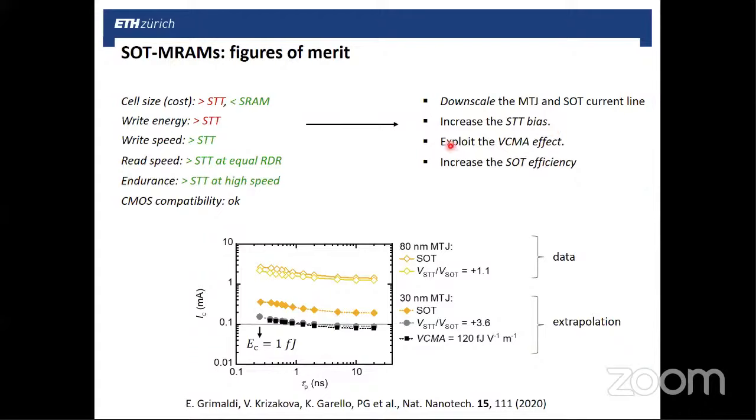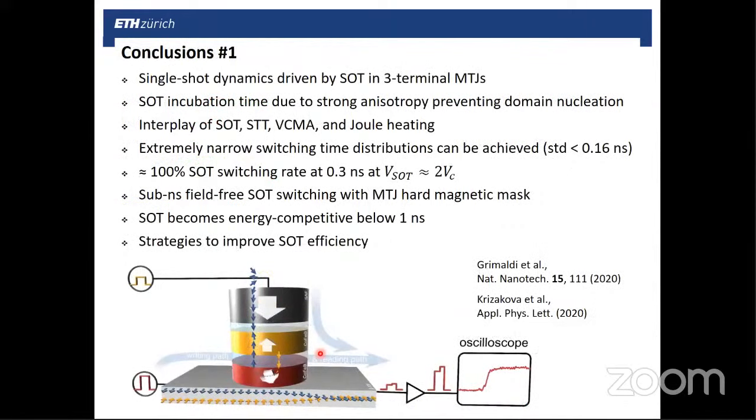There are several things that can be done to improve the efficiency of these devices. One is just plain downscaling that will reduce the absolute energy consumption. Another is to play with the fact that having three terminals allows for more effects to come into play. In particular, STT and VCMA can both be exploited to increase speed and efficiency. Then the holy grail will be increasing the SOT efficiency, or if you want, the effective spin Hall angle, which in our devices is around 0.3. If materials or processes can be found that increase the effective spin Hall angle, then this will be highly beneficial. Here below you see an extrapolation of the critical current required to switch by downscaling an MTJ to 30 nanometer diameter, adding STT and/or VCMA, and this will lead to quite an interesting figure for critical energy required for switching.